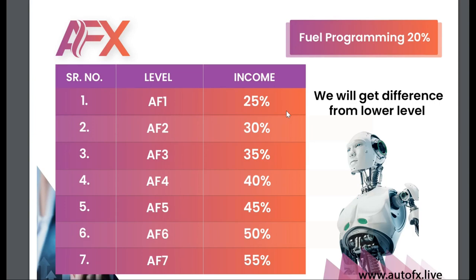This is aside from the money you made when a person signed up. You're also making another stream called flow fee income. When you get to rank two you get 30%, rank three you get 35%, all the way to rank seven where you get 55%. This money can be massive — imagine you have about 100 teammates trading the same $5,000 and 20% happens in a month. You're getting $50 from 100 places — that's $5,000 just from flow fee.